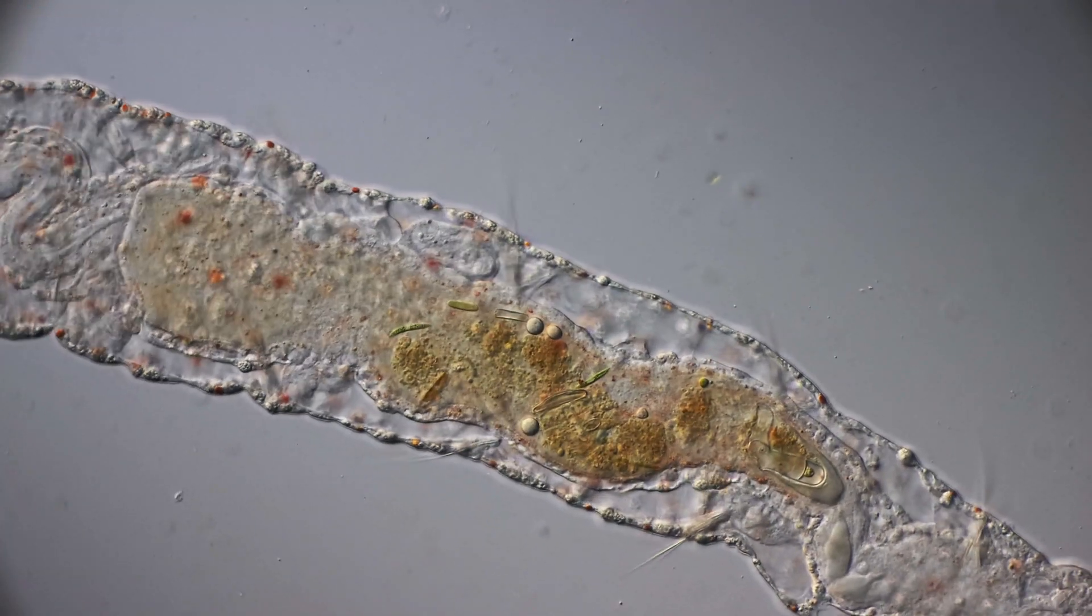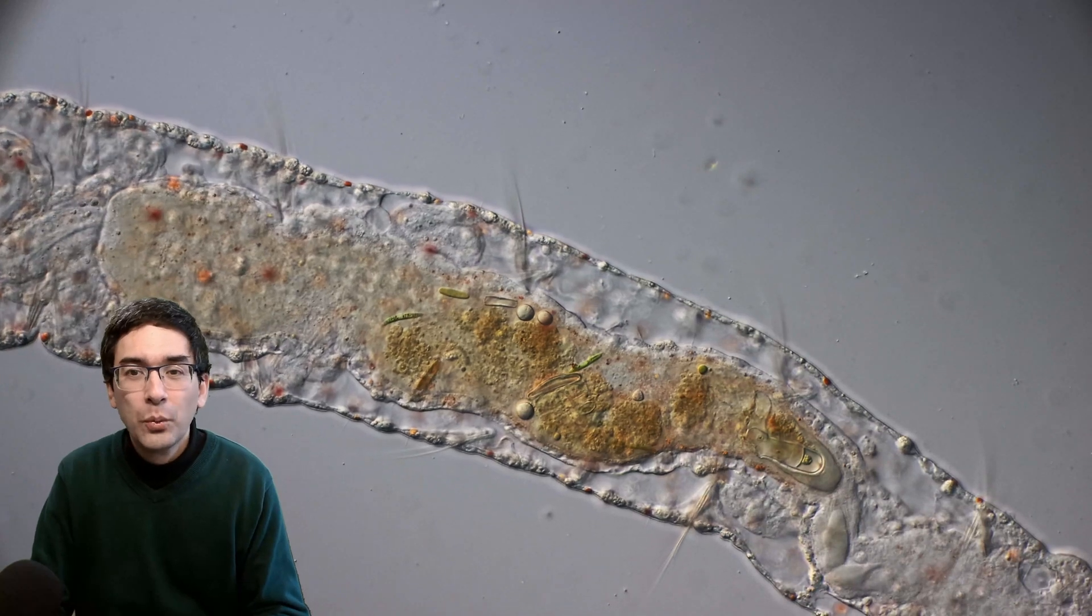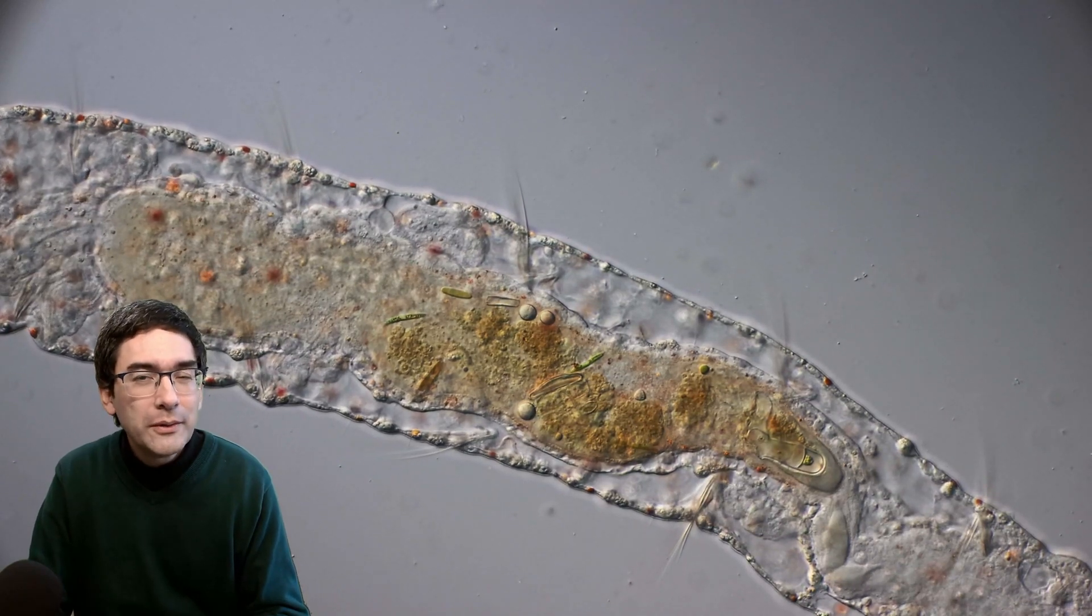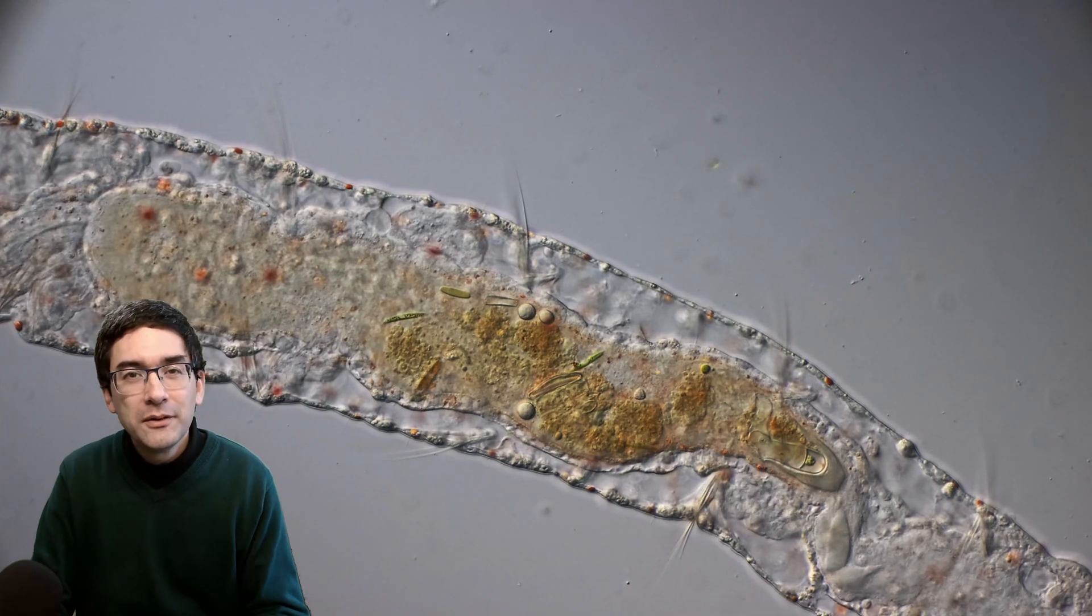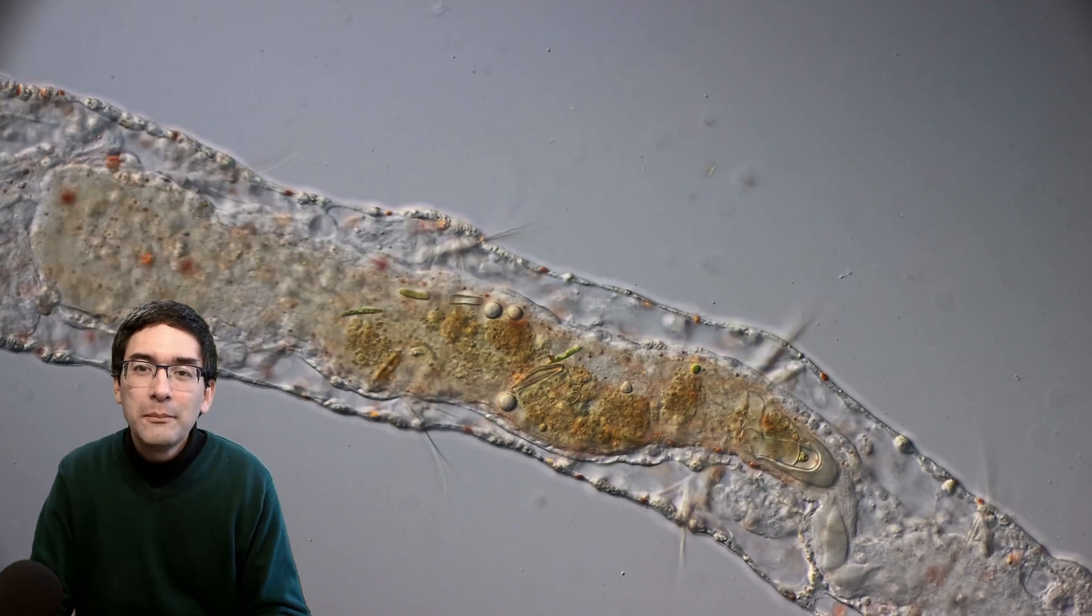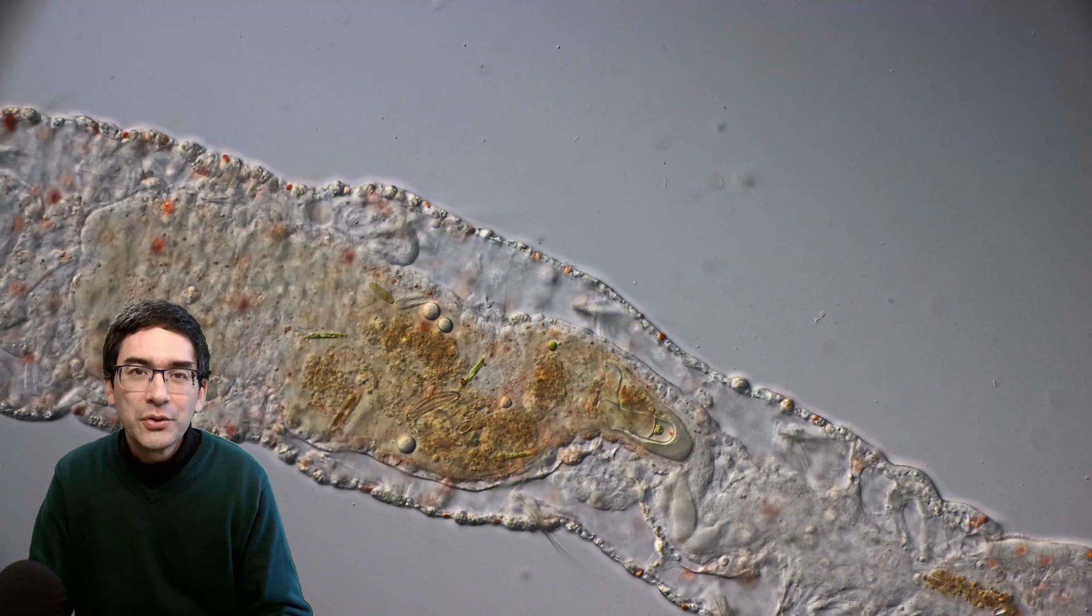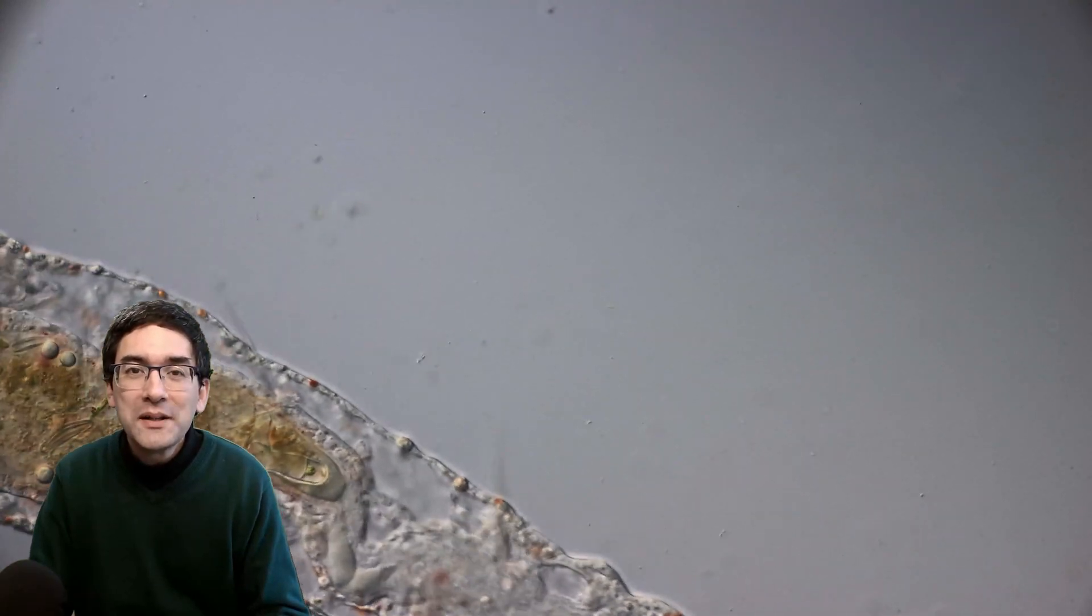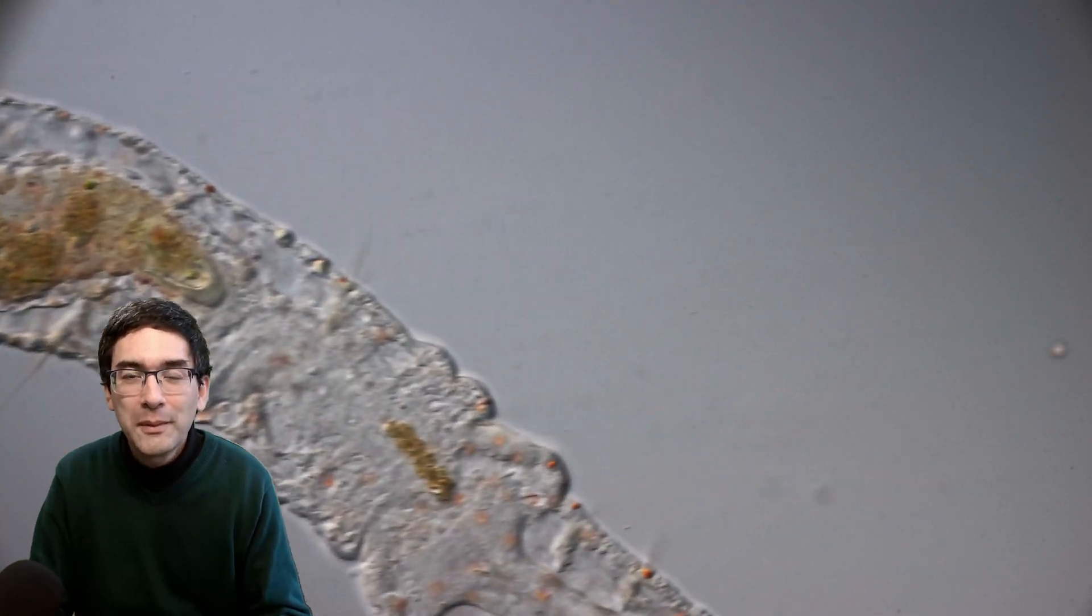Iolosoma is a fairly large microscopic worm. It can be up to a millimeter in length, and some of them even two millimeters long. Its large size and the fact that it's transparent make it quite easy to observe under the microscope.